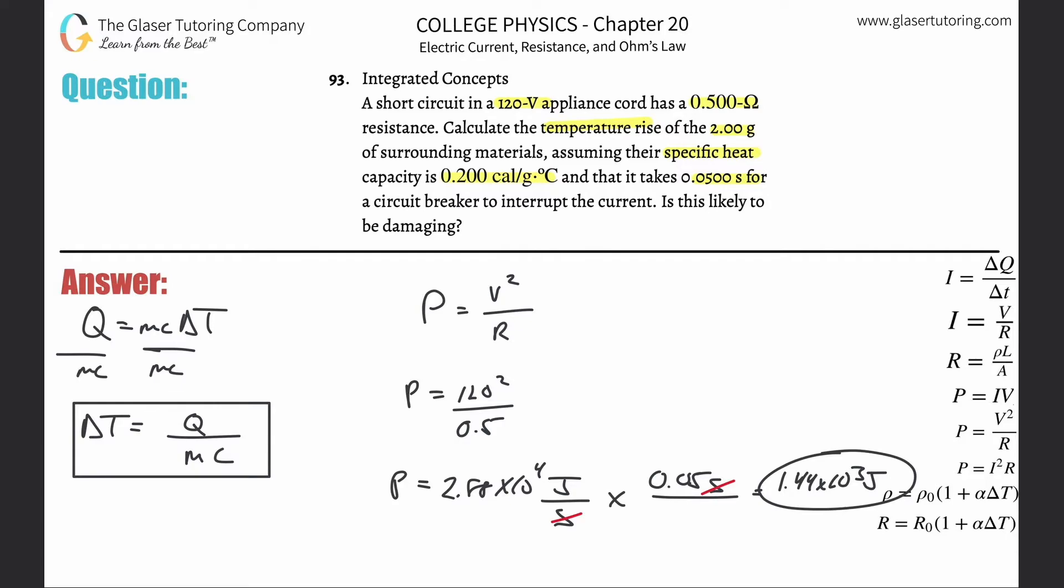This is the amount of energy being inputted into that wire. Now I know my Q. This is 1.44 times 10 to the 3rd. Next, the mass. What's the mass of this material? It told us 2 grams, but we need kilograms, so 2 grams is 2 times 10 to the minus 3.